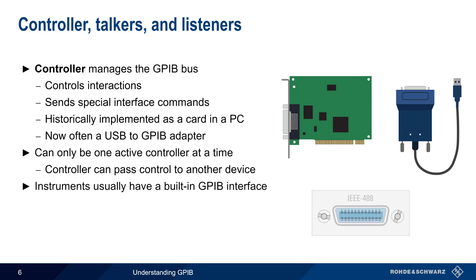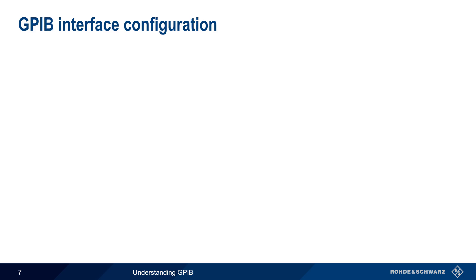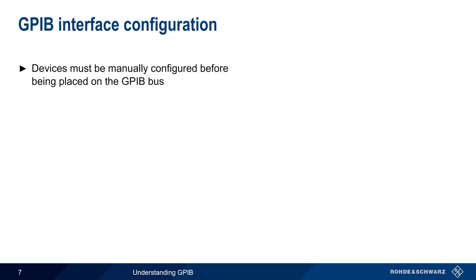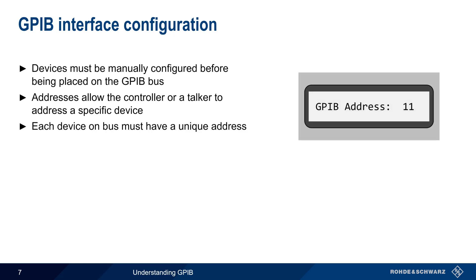Test and measurement instruments usually have a built-in GPIB interface on the rear of the device. Note that this port may be labeled IEEE 488. Instruments on a GPIB bus can operate either as a listener that only receives commands, or in most cases as talkers that can either send or receive data. Devices must be manually configured before being placed on a GPIB bus. This configuration consists primarily of an address, which allows the controller or talker to communicate with a specific device, and therefore each device on the bus must have a unique address.